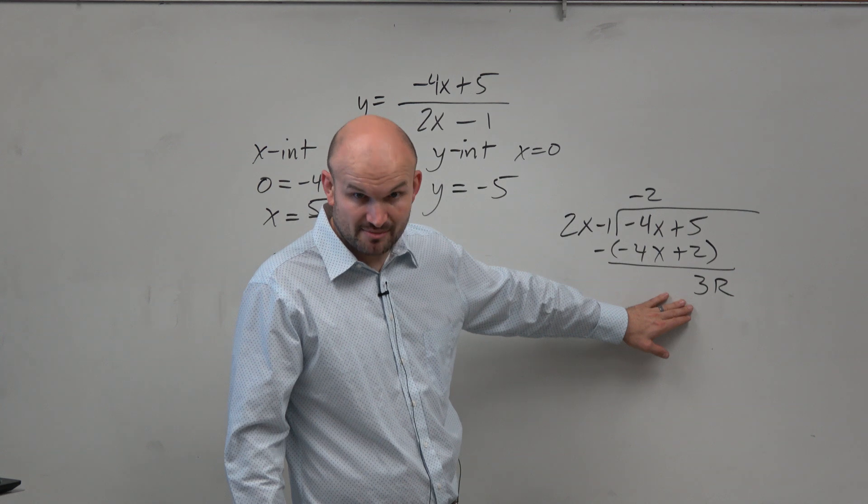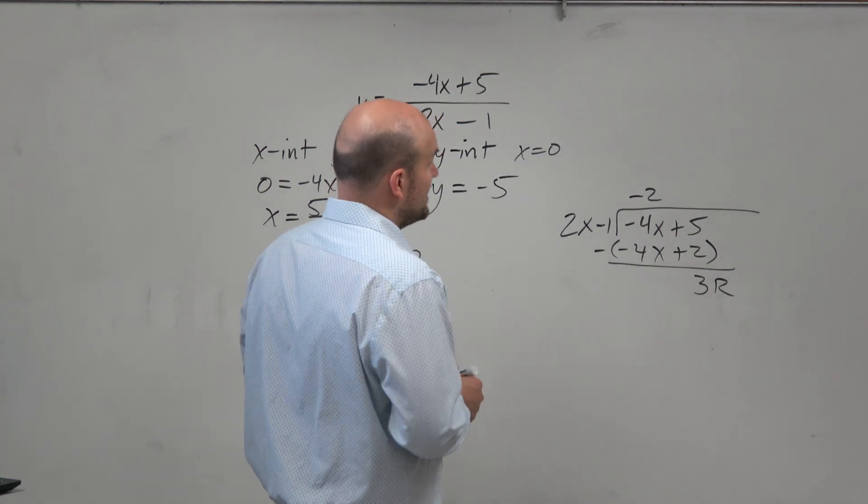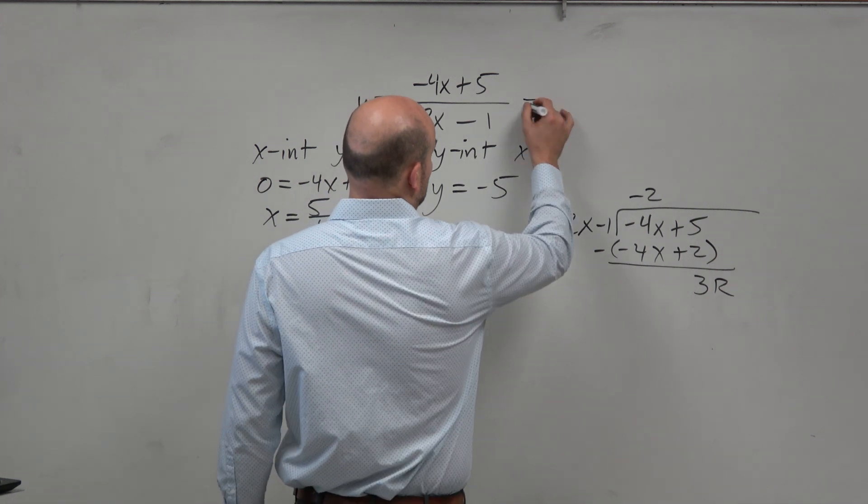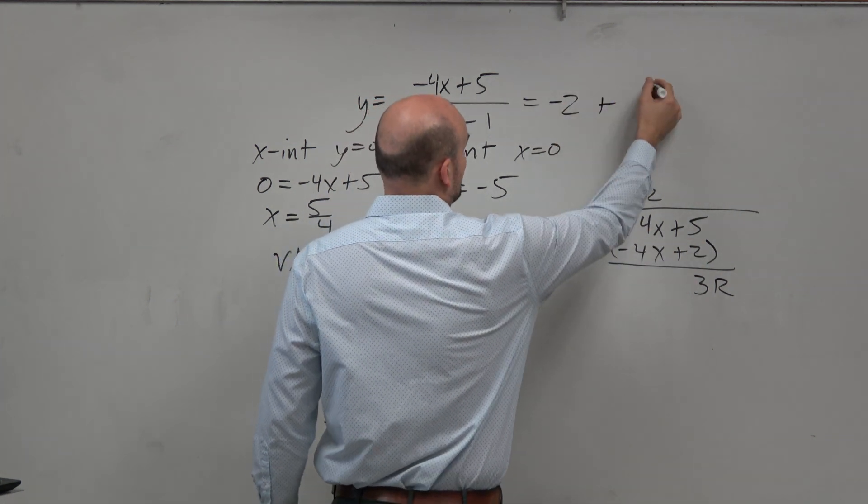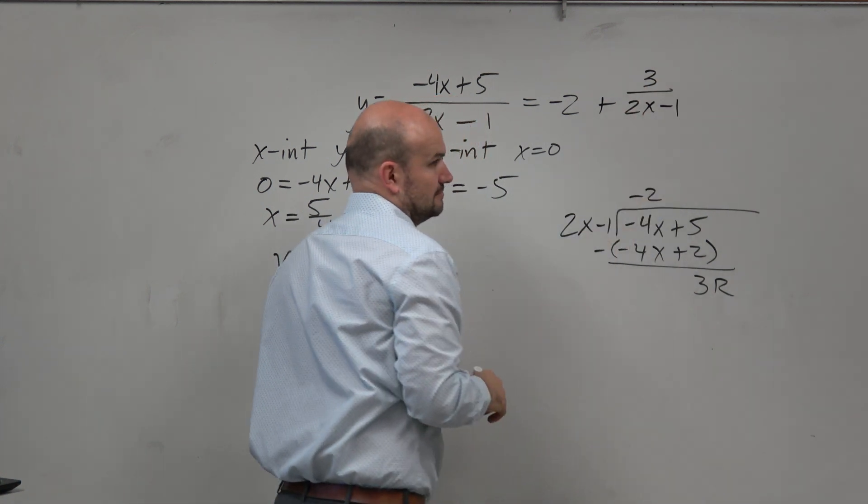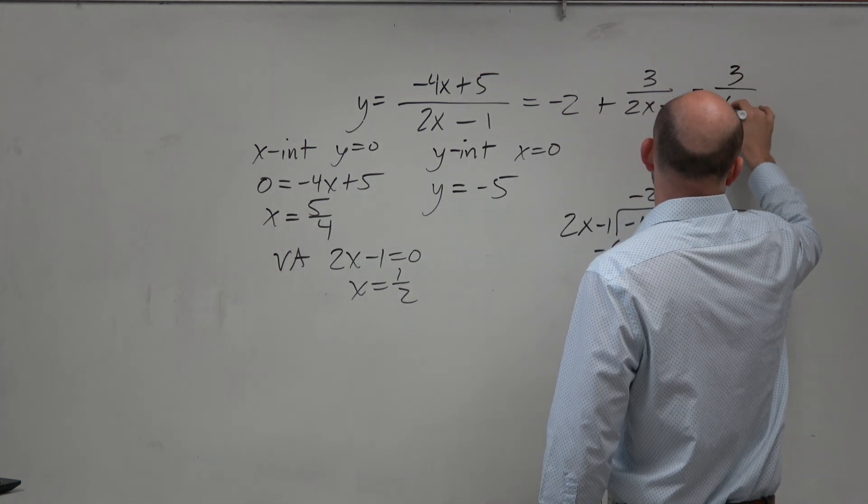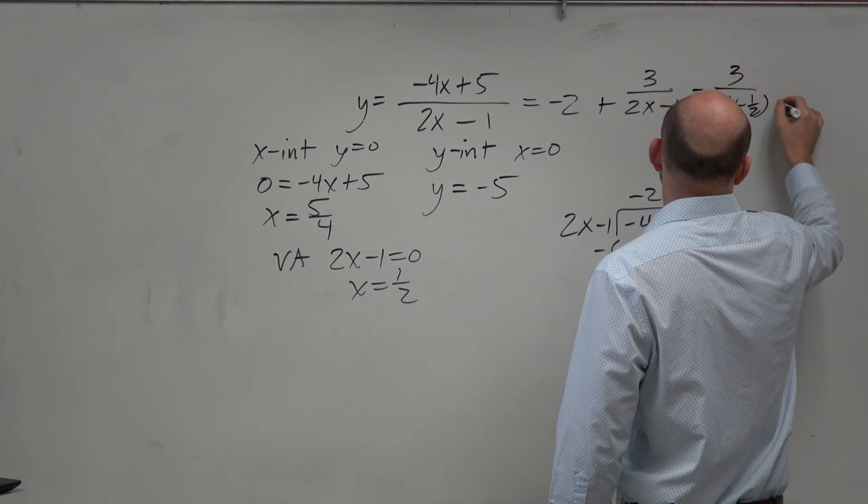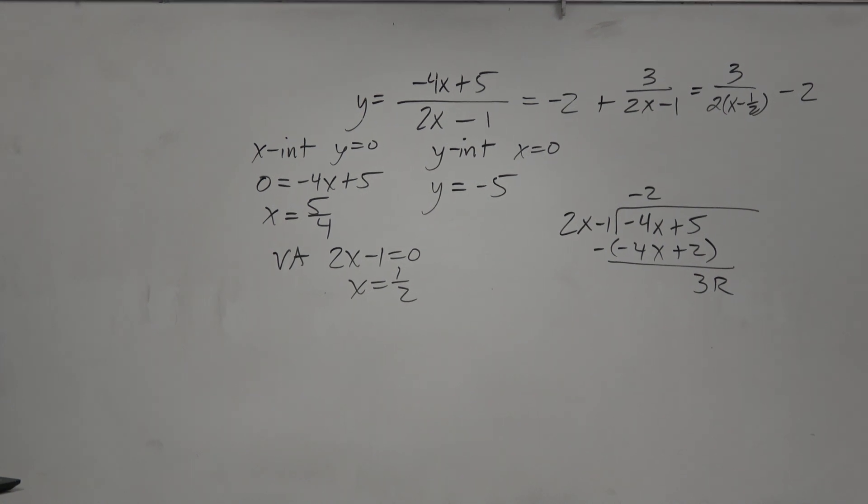And in algebra 2, hopefully, that's something you guys reviewed was how to write this answer with the remainder. The way to write the answer with the remainder is going to be quotient plus the remainder over the divisor, which is the same thing as 3 over 2 times x minus 1/2 minus 2, if you just flip those around.